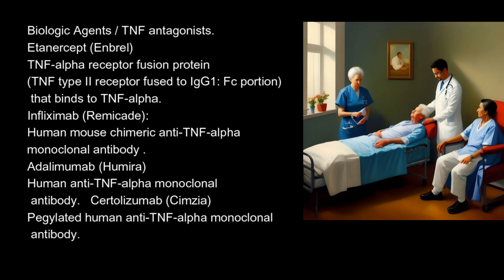Biologic agents — TNF antagonists include: Etanercept (Enbrel), a TNF-alpha receptor fusion protein (TNF type 2 receptor fused to IgG1 Fc portion) that binds to TNF-alpha; Infliximab (Remicade), a human-mouse chimeric anti-TNF-alpha monoclonal antibody; Adalimumab (Humira), a human anti-TNF-alpha monoclonal antibody; and Certolizumab (Cimzia), a pegylated human anti-TNF-alpha monoclonal antibody.